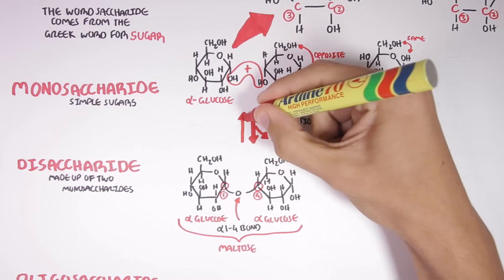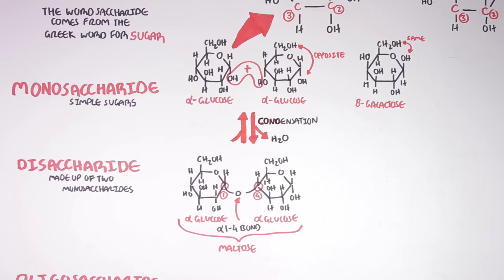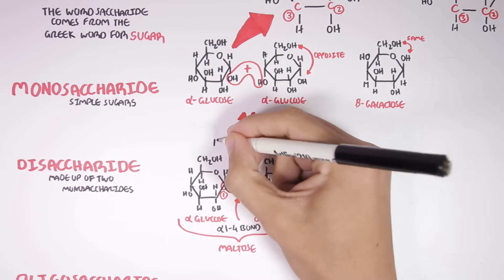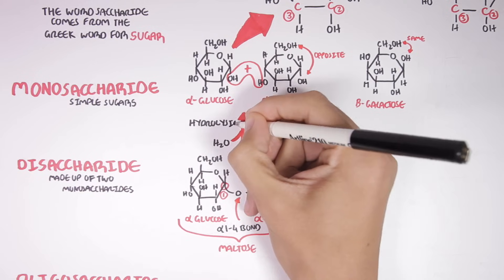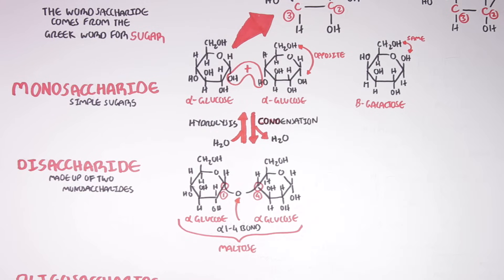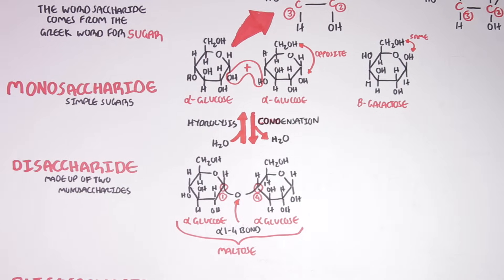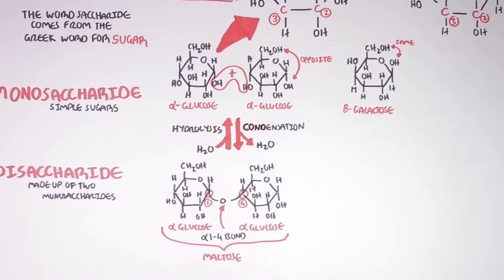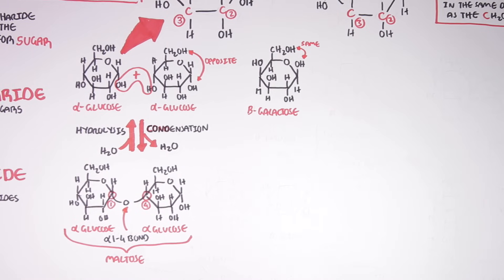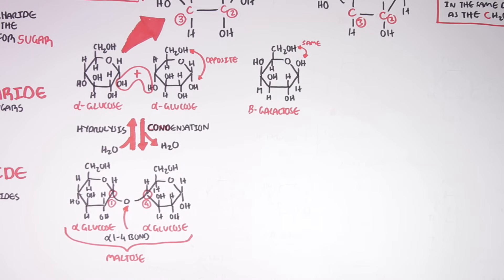The process of linking monosaccharides with one another is called condensation, and here water is released. Therefore the reverse reaction is hydrolysis, where we add water. Adding water to an alpha-1,4 glycosidic bond will break the bond. Maltose is only one example of a disaccharide — let's look at some other common examples.